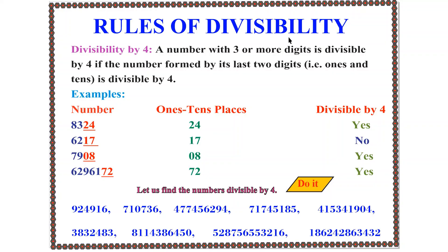Rules of divisibility. First, we will check the rule of divisibility by 4. A number with 3 or more digits is divisible by 4 if the number formed by its last 2 digits — that is the 1s and 10s place — is divisible by 4.